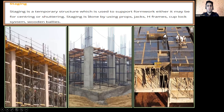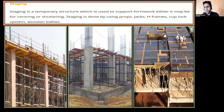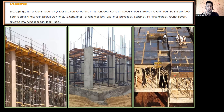Now, what is shuttering? Shuttering is when you are placing formwork for a vertical element. For example, beam outside shuttering or column shuttering — anywhere you place it for a vertical element, we call it shuttering.